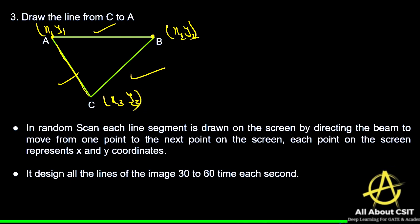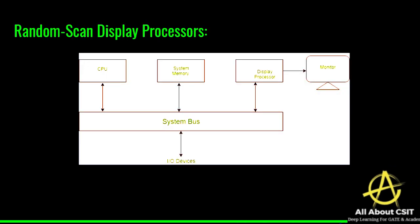The system is designed to draw all the lines of the image 30 to 60 times each second. That is the main advantage of using this random scan display.